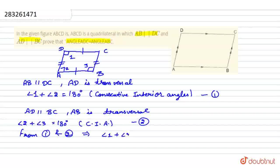Angle 1 plus angle 2 equals angle 2 plus angle 3. So, canceling angle 2 from both sides, angle 1 equals angle 3. Therefore, we can prove that angle DAB equals angle ABC.